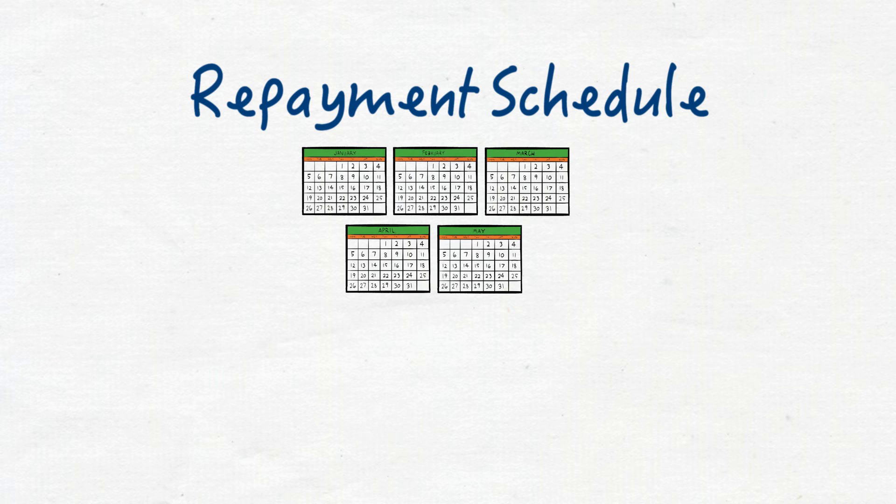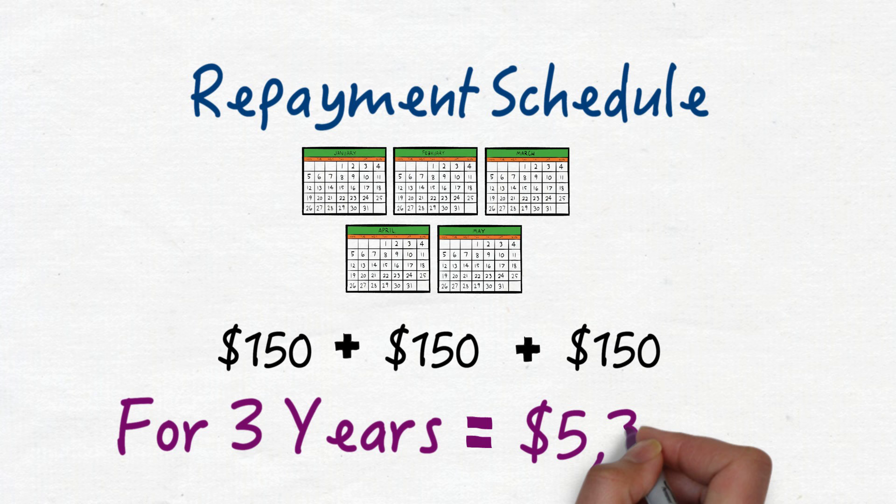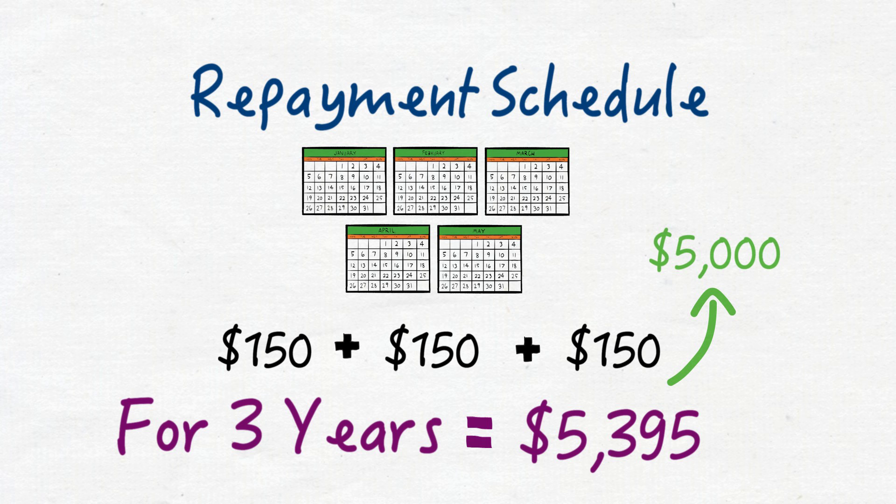And if you pay $150 every month for 3 years, you'll end up paying $5,395 to the loan. $5,000 of that will be the principal that you borrowed. $395 is the total interest paid.